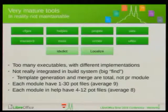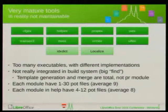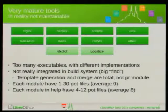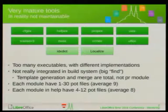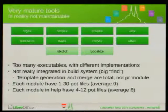All translators should also be complaining, because at the moment every module — a module being Writer, for instance — has from 1 to 30 PO files, with no obvious relation to where they actually come from. The average is 9 per module, and it's no fun.